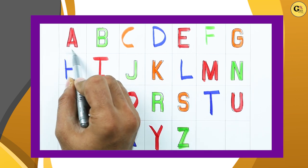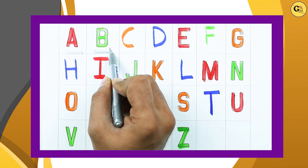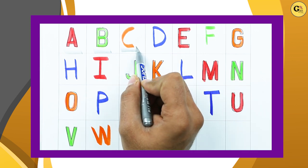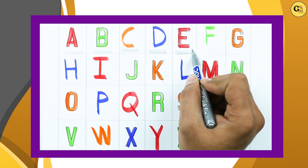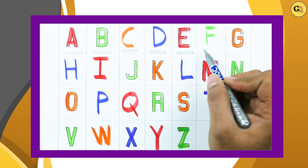A. A for apple. B. B for ball. C. C for cat. D. D for dog. E. E for elephant.